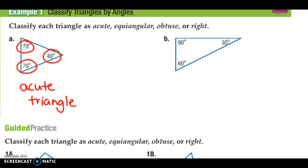In letter B, we have three angles: a 60 degree angle, a 30 degree angle, and notice a 90 degree angle. To be a right triangle, we only have to have one right angle. So this would be a right triangle.